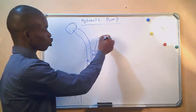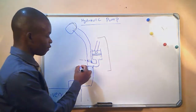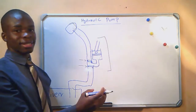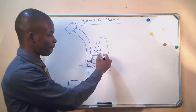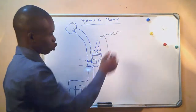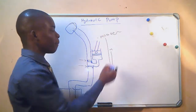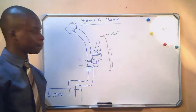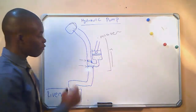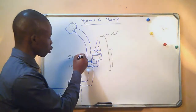We are going to introduce a hydraulic pump and these two valves. The pump consists of a cylinder and a piston which is driven by a motor. As the piston moves up, vacuum will be created in the system, forcing this valve to open and this valve to remain closed.